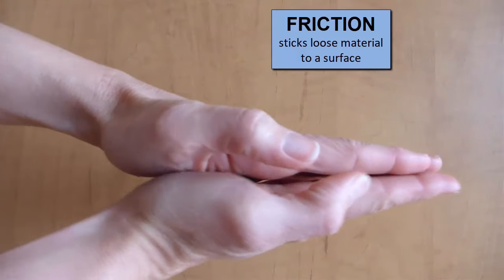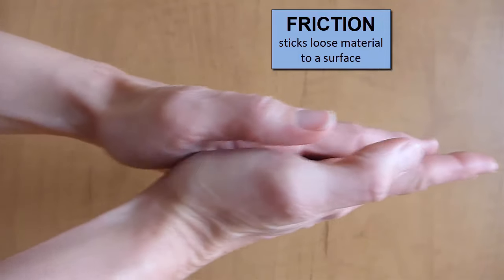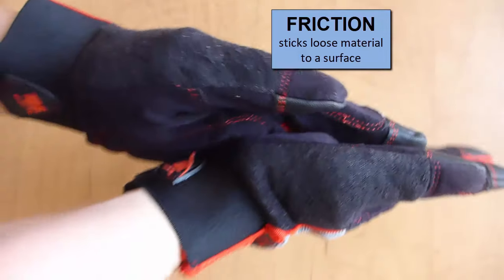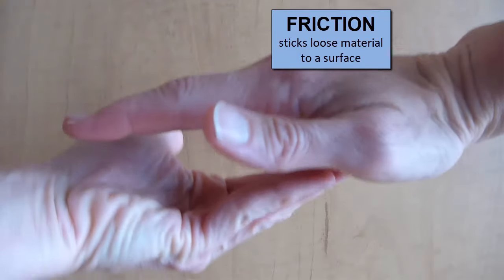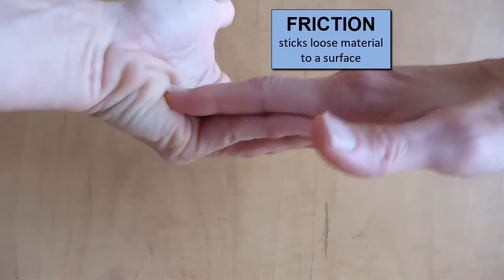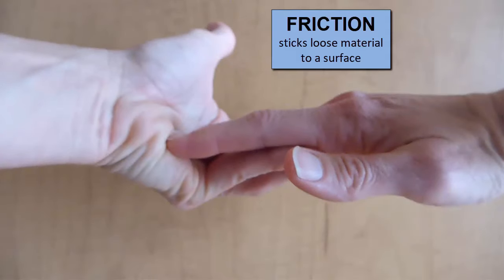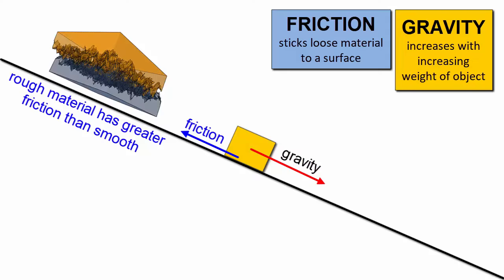When my hands are smooth, they slide by each other easily. If I cover them in rough gloves, it gets harder to slide them past each other. When I bend my hands or let my fingers interfere, it's even harder to slide them. All of these are ways to increase the friction and keep objects from moving downhill.